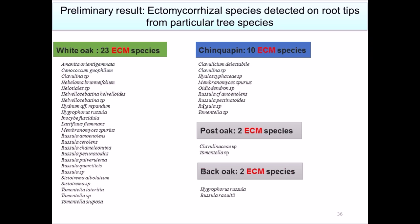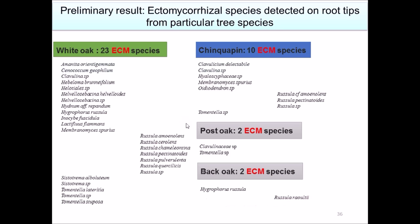These are preliminary results — a list of ectomycorrhizal species detected in these trees. I have about 300 more samples to process for sequencing. So far, in white oak I found at least 23 ECM species, in chinkapin at least 10 ECM species, and in post oak 2 ECM species. An interesting finding is that a community of genus Russula is present in white oak, chinkapin oak, and black oak — and after processing all sequences, I expect to find more Russula in post oak and black oak as well.